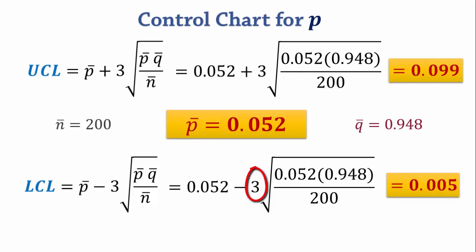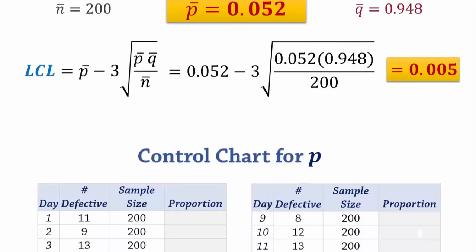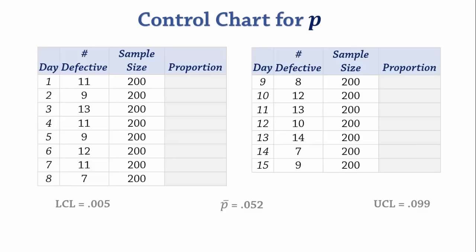Now that we have the control limits, let us now calculate the proportions and construct the p-chart. The proportions are found by dividing the number of defectives by sample size. So for day 1, the proportion is 11 divided by 200, which gives 0.055. We do the same for other days, so we have all information required for the chart.